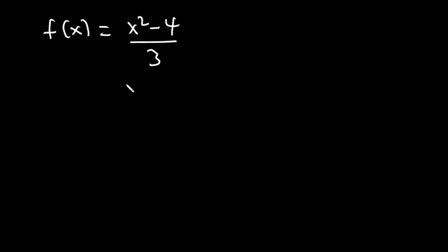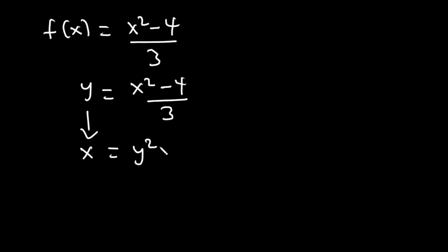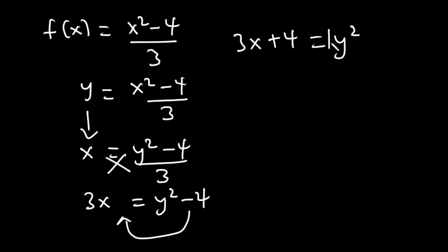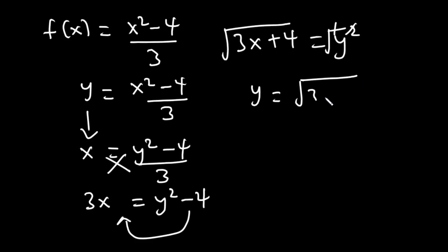Let's find the inverse of f(x) = (x² − 4) / 3. We replace f(x) with y: y = (x² − 4) / 3, then interchange x and y: x = (y² − 4) / 3. Cross multiplying gives 3x = y² − 4. Transposing −4 gives 3x + 4 = y². Introducing square roots, y = √(3x + 4), which is f⁻¹(x).